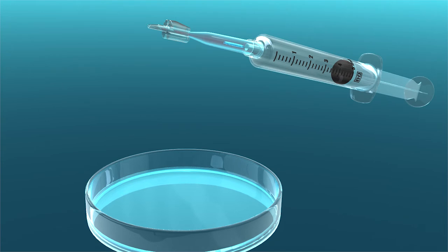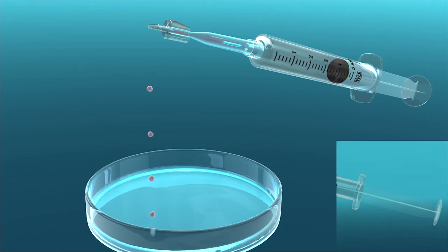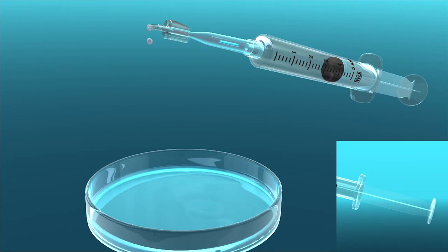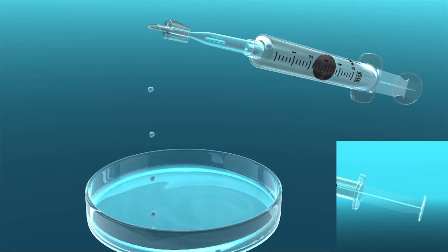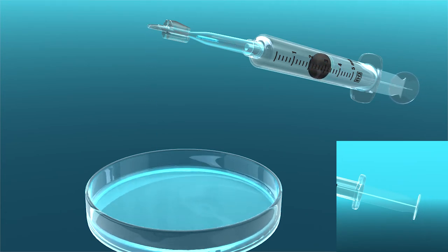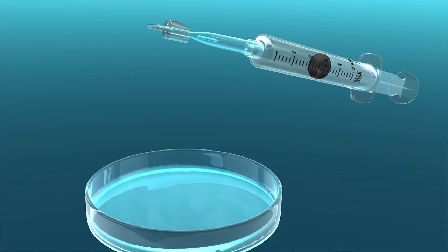Carefully flush corneal storage media from the cannula by using gentle bursts of BSS from the syringe. To prevent the graft from prematurely entering the slender end of the cannula, do not introduce BSS too quickly or forcefully.